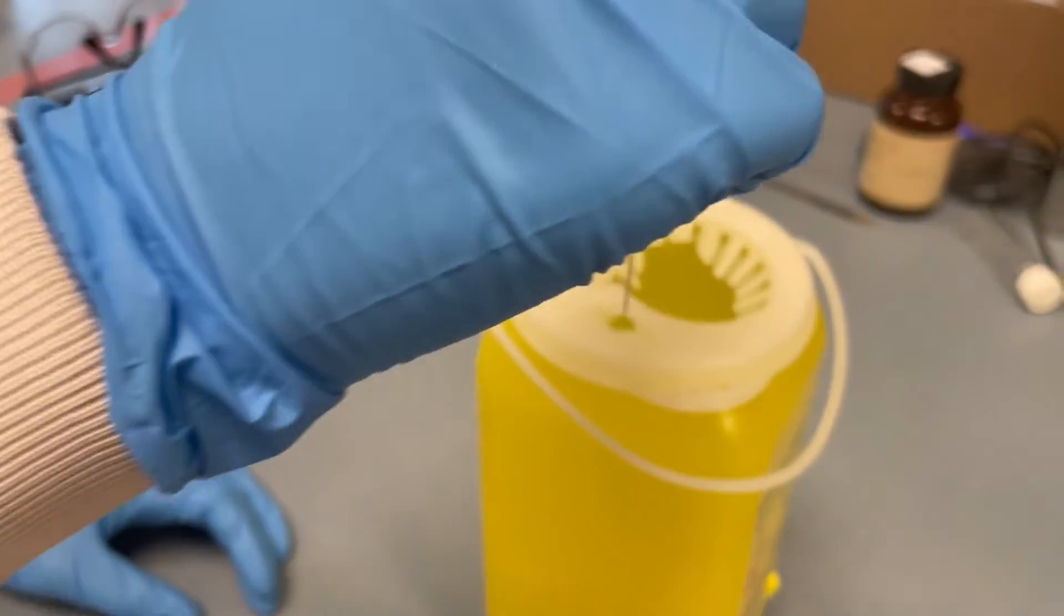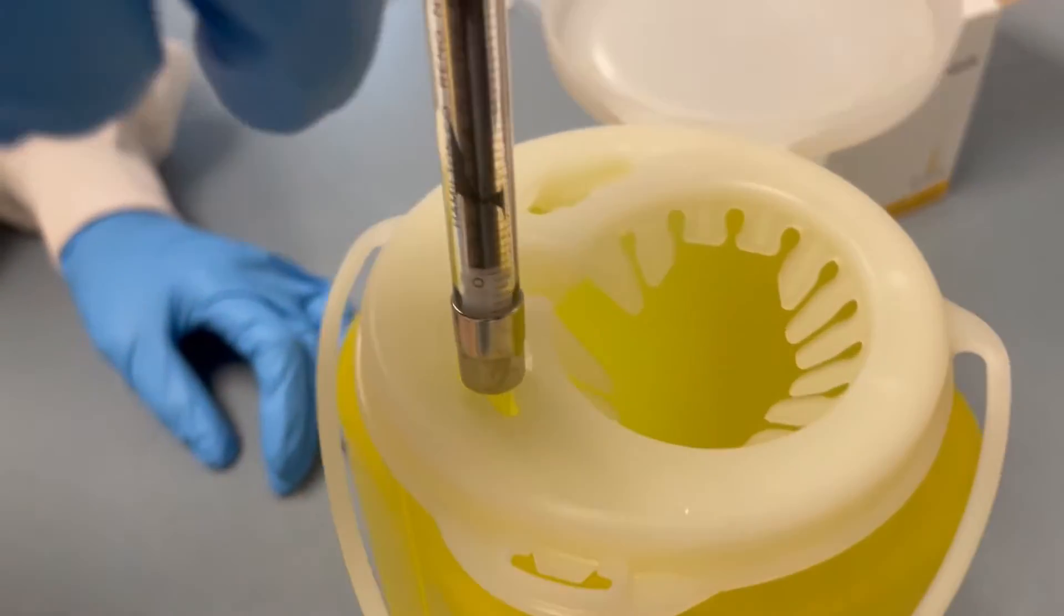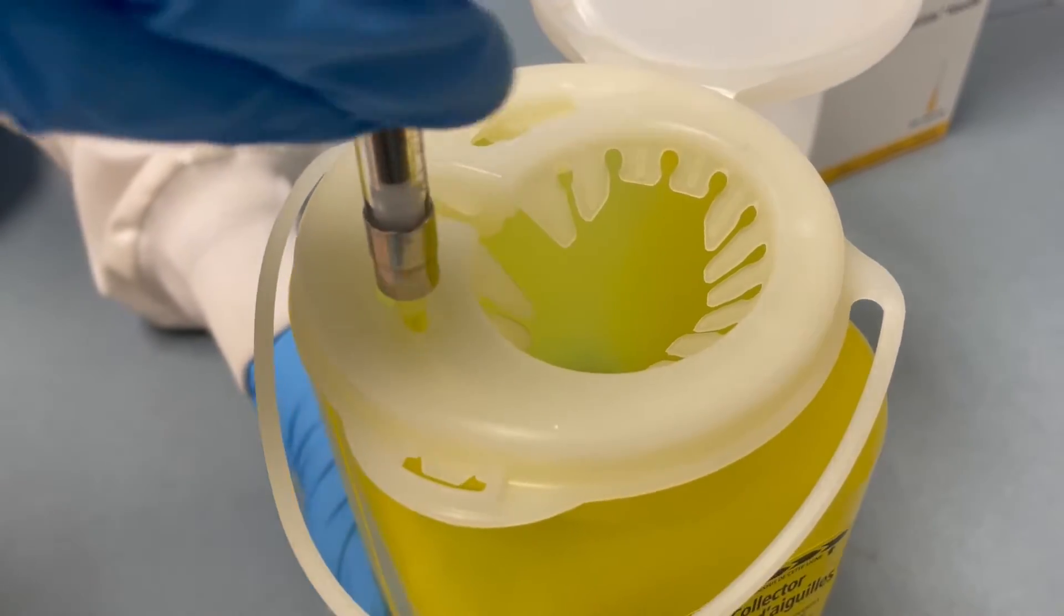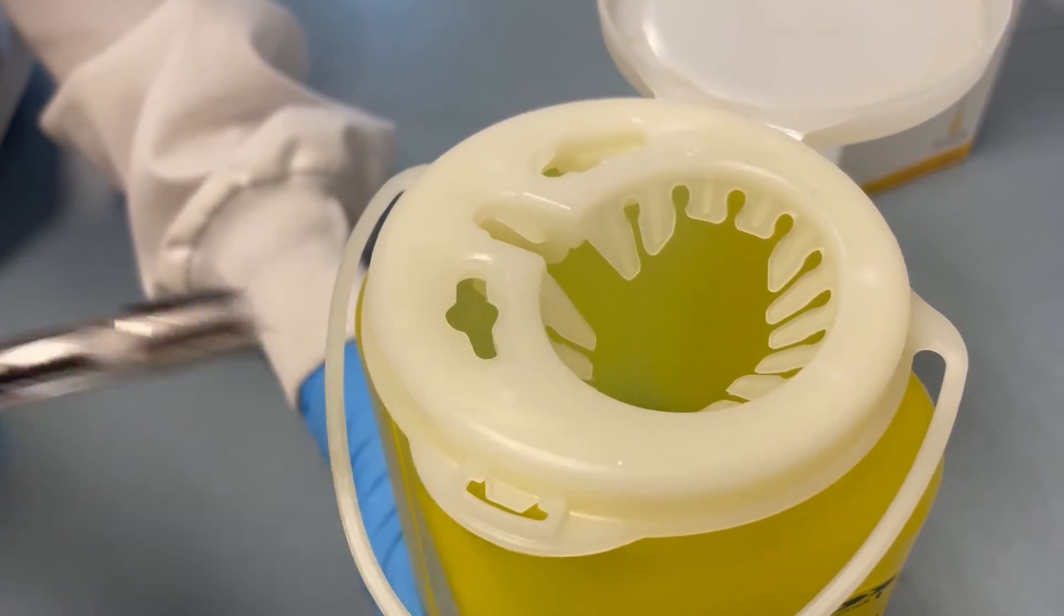To dispose of these needles you can insert them into a slot at the top of the sharps container and just twist them off and then knock them right in.